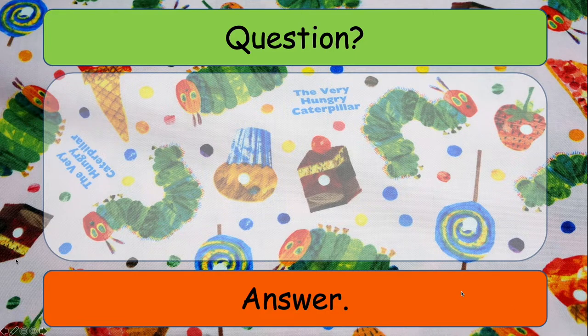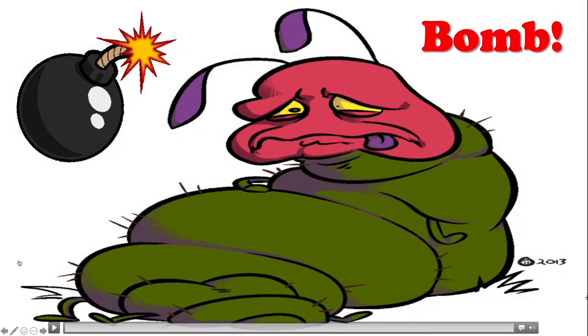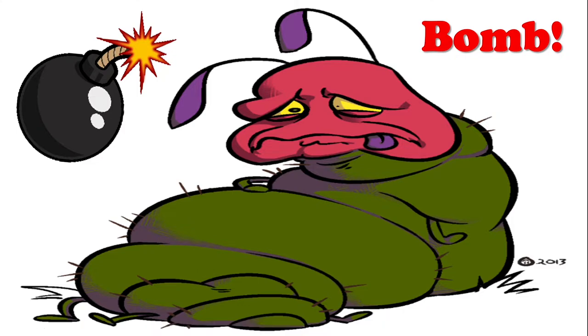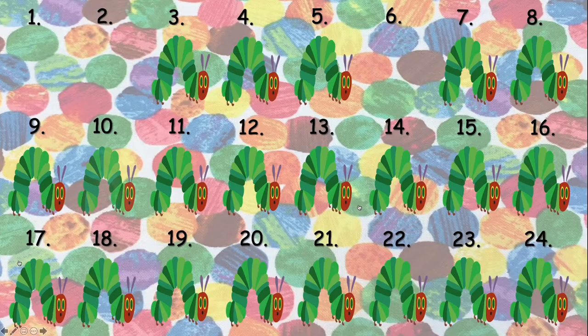Now this time number 10 — question and answer, and click. Okay — I have a stomach ache. And this one is the bomb, so this team will lose all their points. For this one, just click on the character — the Hungry Caterpillar character who's feeling sick. Click on him and that will take you back to the main question slide.